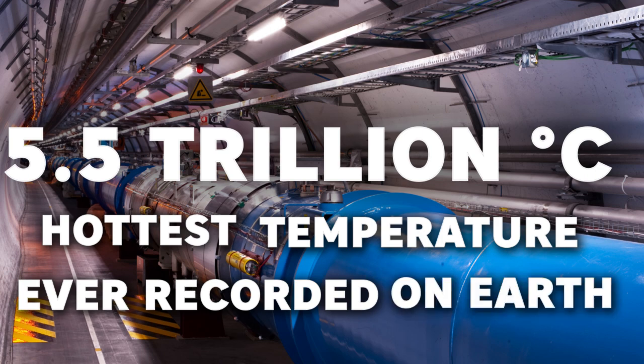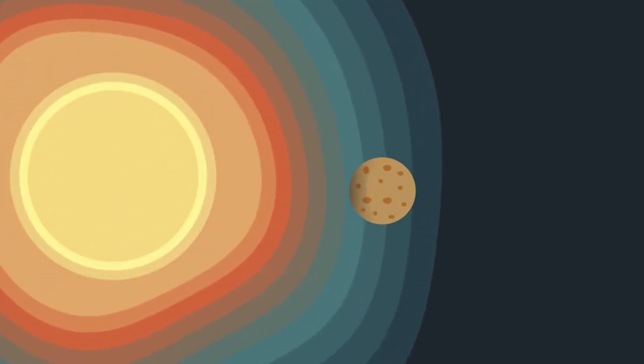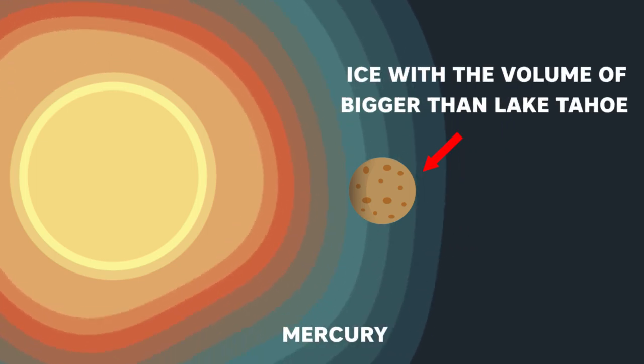But the earth is not the strangest place in the solar system. Mercury is the closest planet to the sun, but simultaneously it has an ice with a volume of bigger than Lake Tahoe. If you want to know how and why, check out this video. Thanks for watchin'.